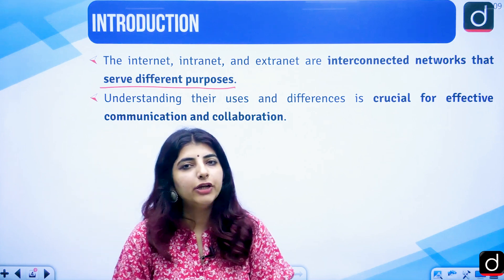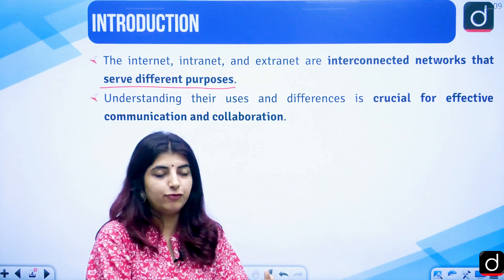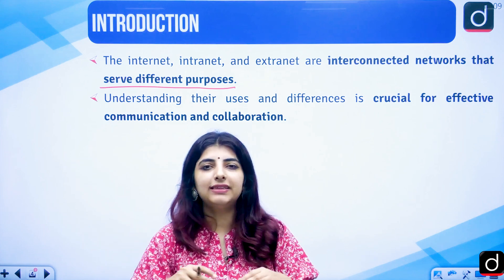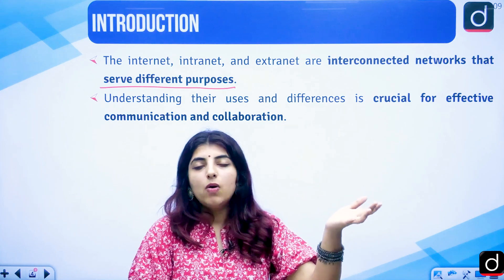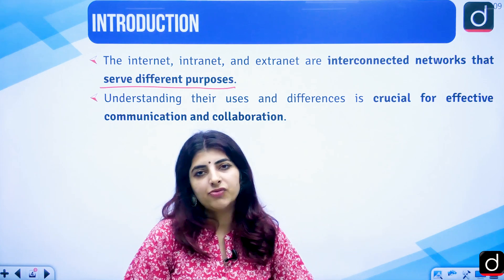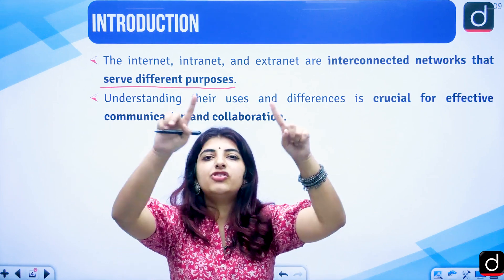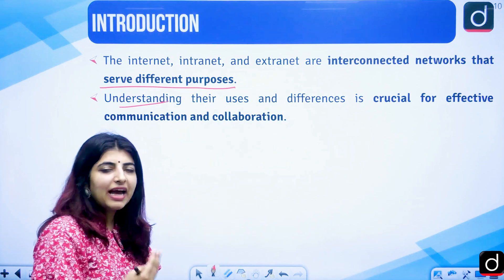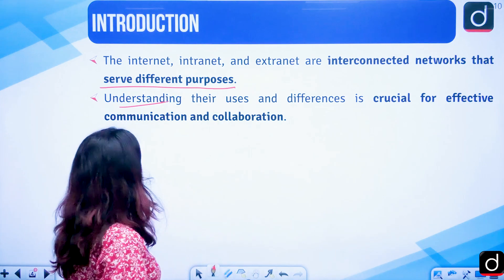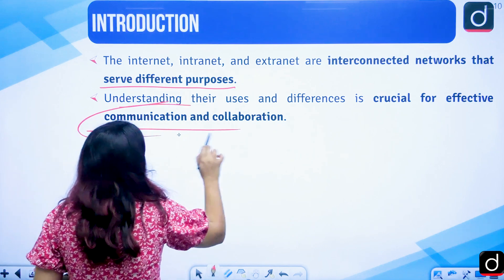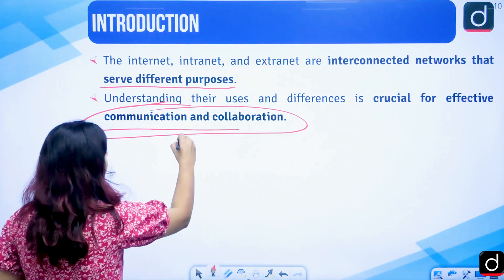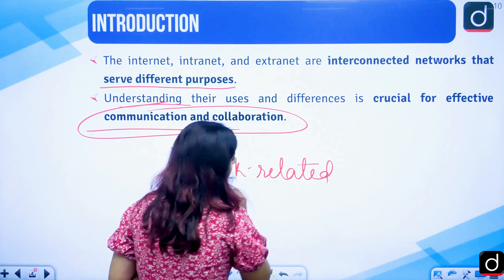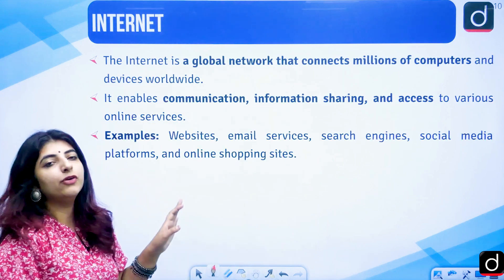We all know internet — we all use it. We have data packs installed in our mobile phones, we have Wi-Fi at our places. That is how we are getting access to Instagram, to YouTube where you are viewing this video right now. So that is through the usage of internet, which is a global network. Understanding the uses, differentiation, and similarities amongst these networks is crucial for effective network-related communication and collaboration.